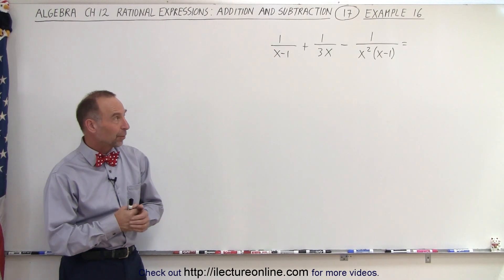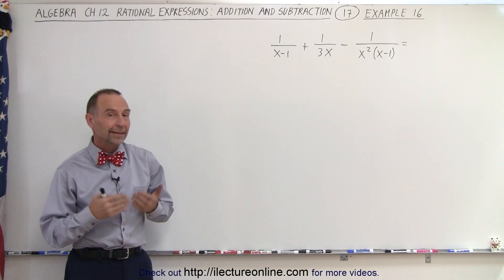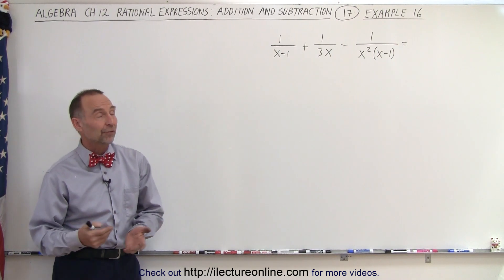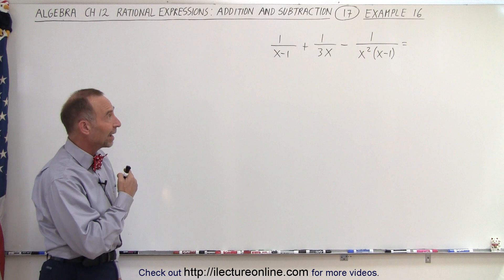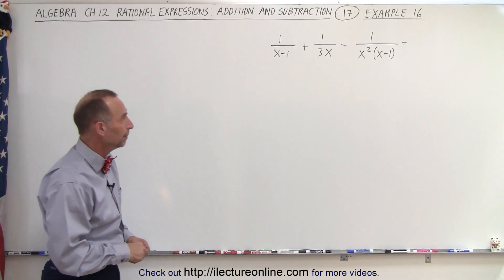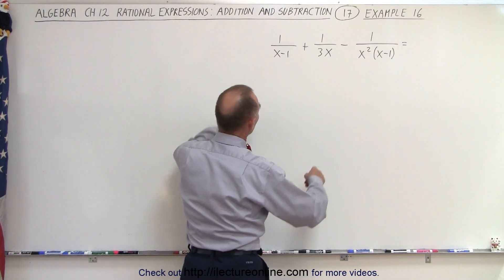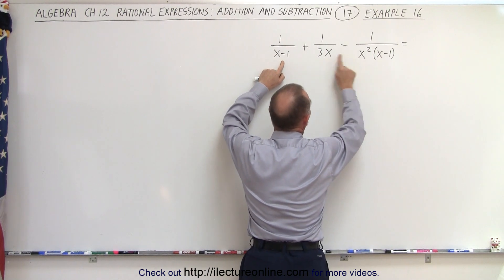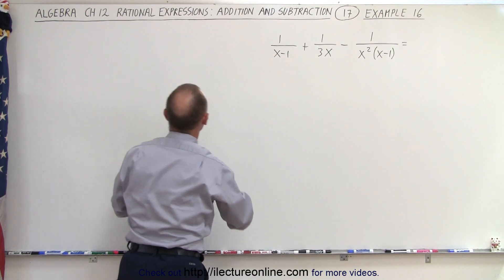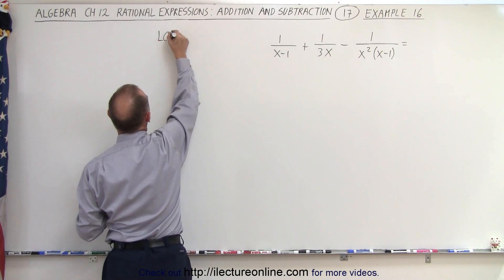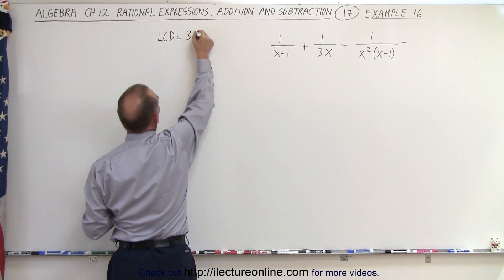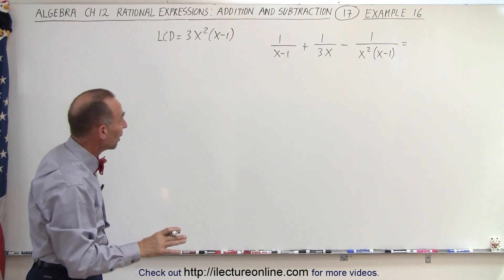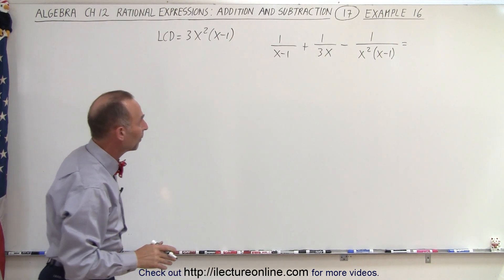Welcome to our lecture online. When we look at this example, we do not need to factor the denominators that are already in most factored form. We just need to find the lowest common denominator. So when I look, I can see that we have the factor x minus 1, we have an x squared and we have a 3, which means the LCD in this case is equal to 3x squared times x minus 1.